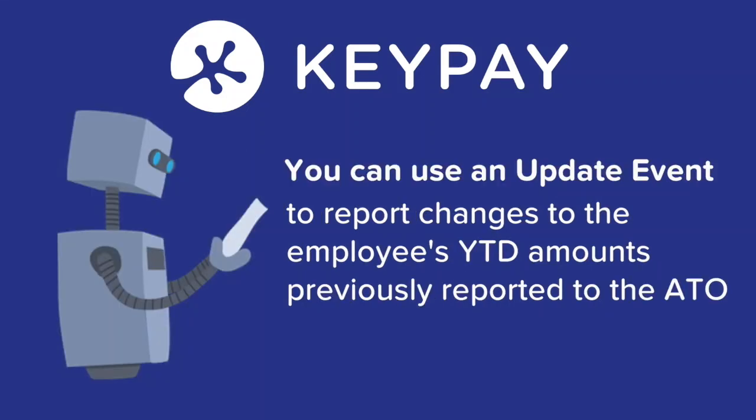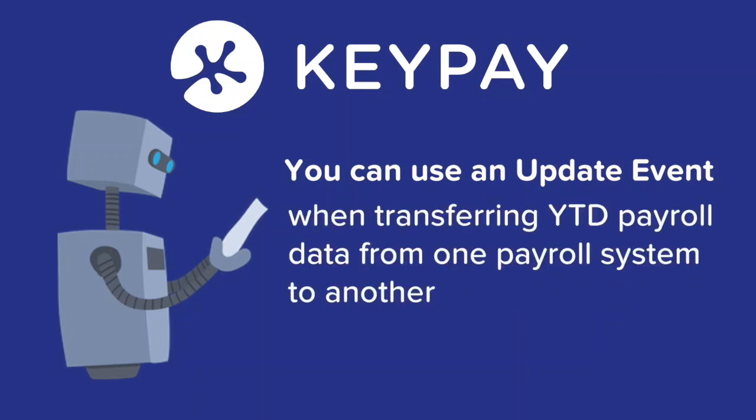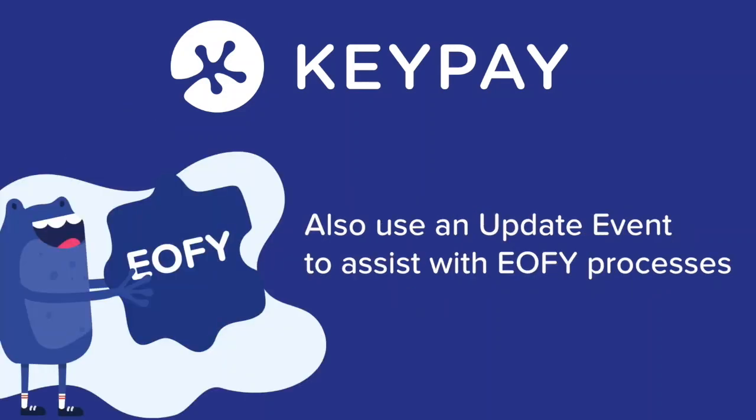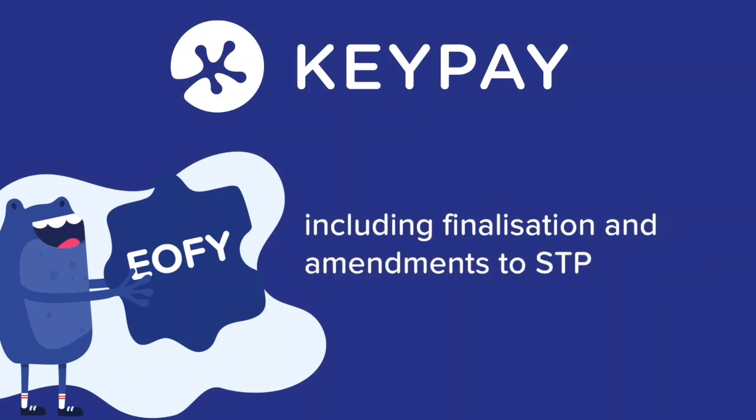An update event is used to report changes to the employee's year-to-date amounts previously reported to the ATO. You can also use an update event when transferring year-to-date payroll data from one payroll system to another, in order to align the latest employer BMS data with the last employee data reported to the ATO. You can also use an update event to assist you with end of financial year processes including finalisation and amendments to STP.